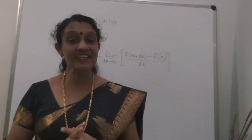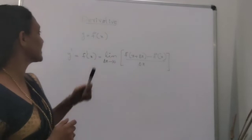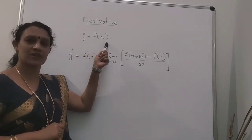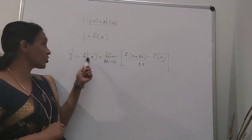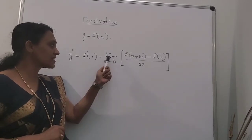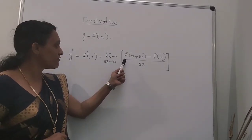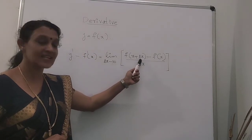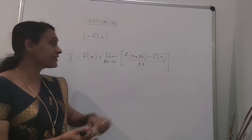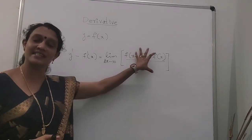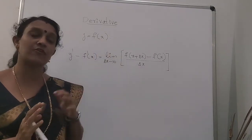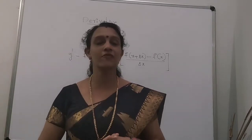For defining the derivative of a function, let us first consider y is equal to f of x as the function. Then the derivative of y, we are denoting it by y dash or f dash of x, and this is defined as limit delta x tends to 0, f of x plus delta x minus f of x, divided by delta x. If this limit exists, we can say that the function is differentiable.